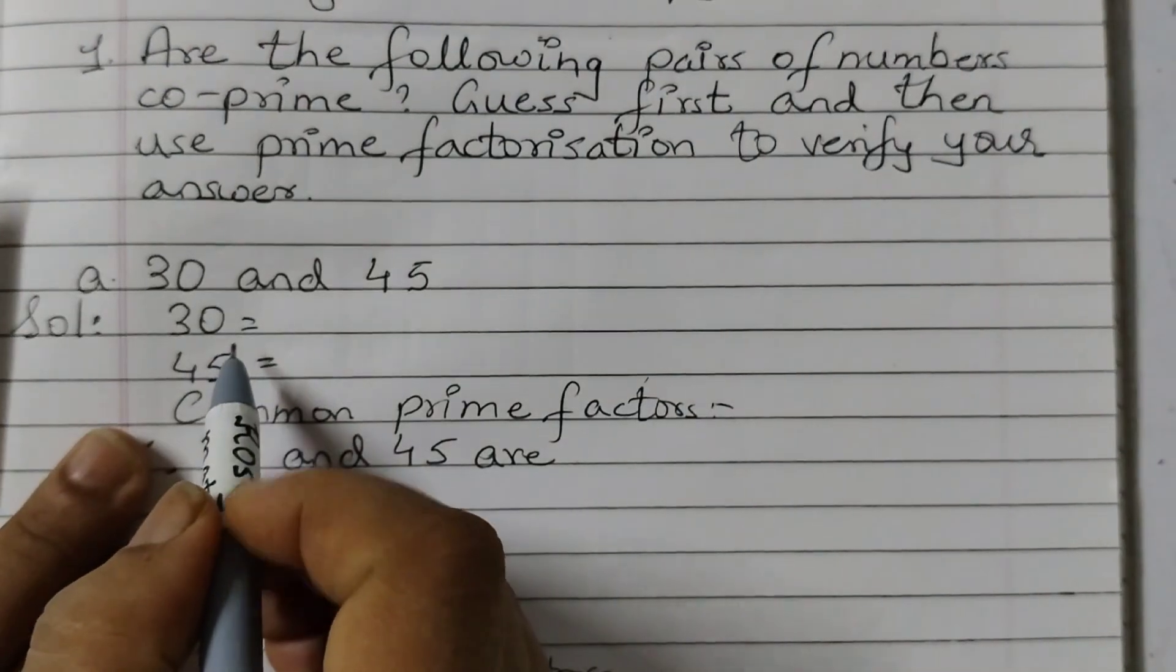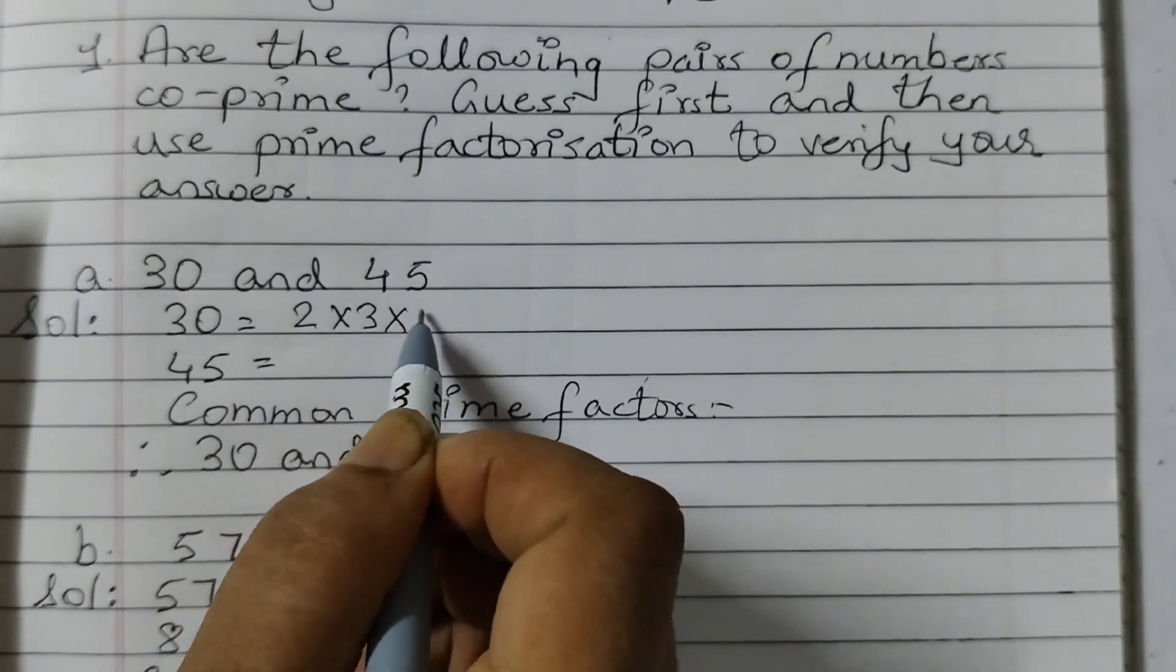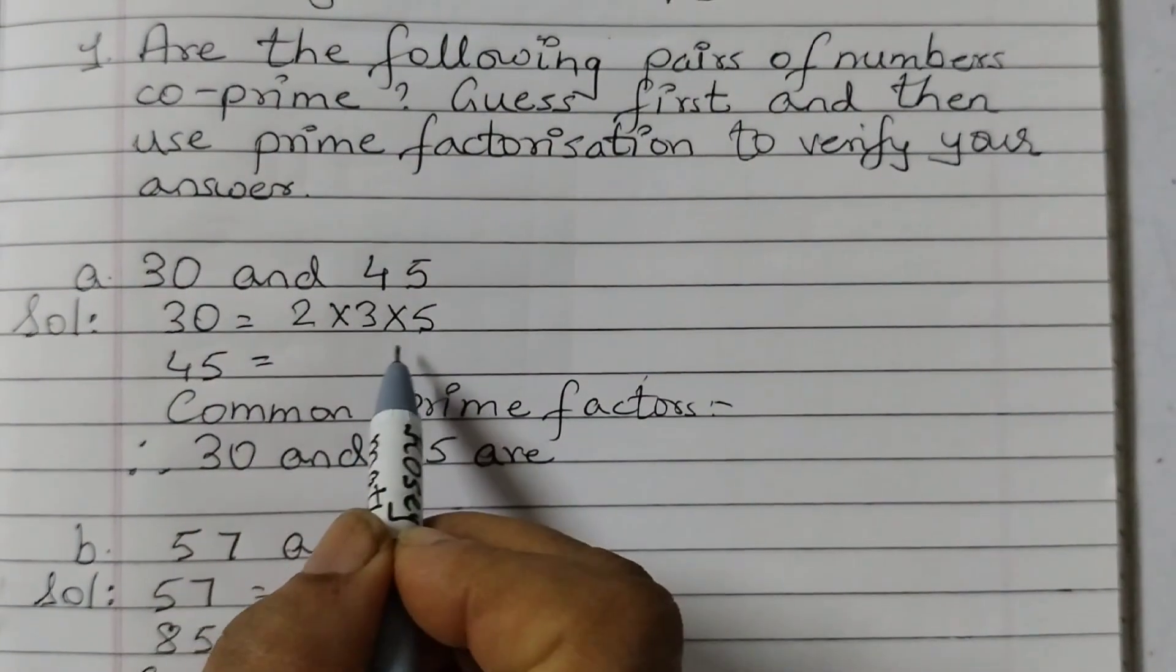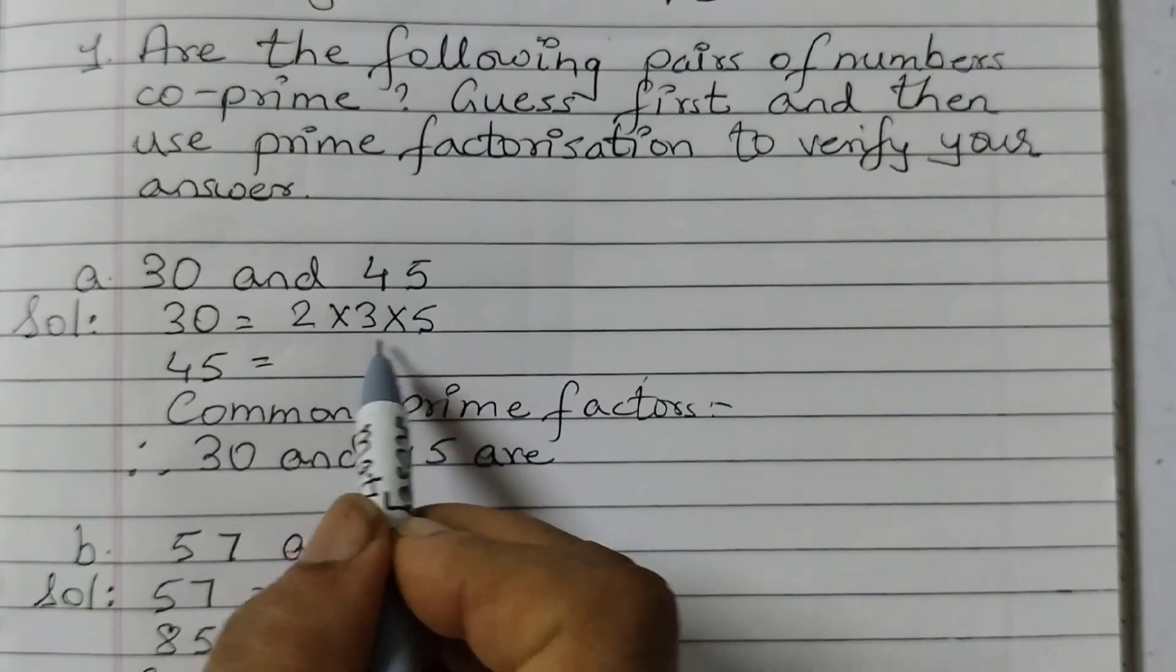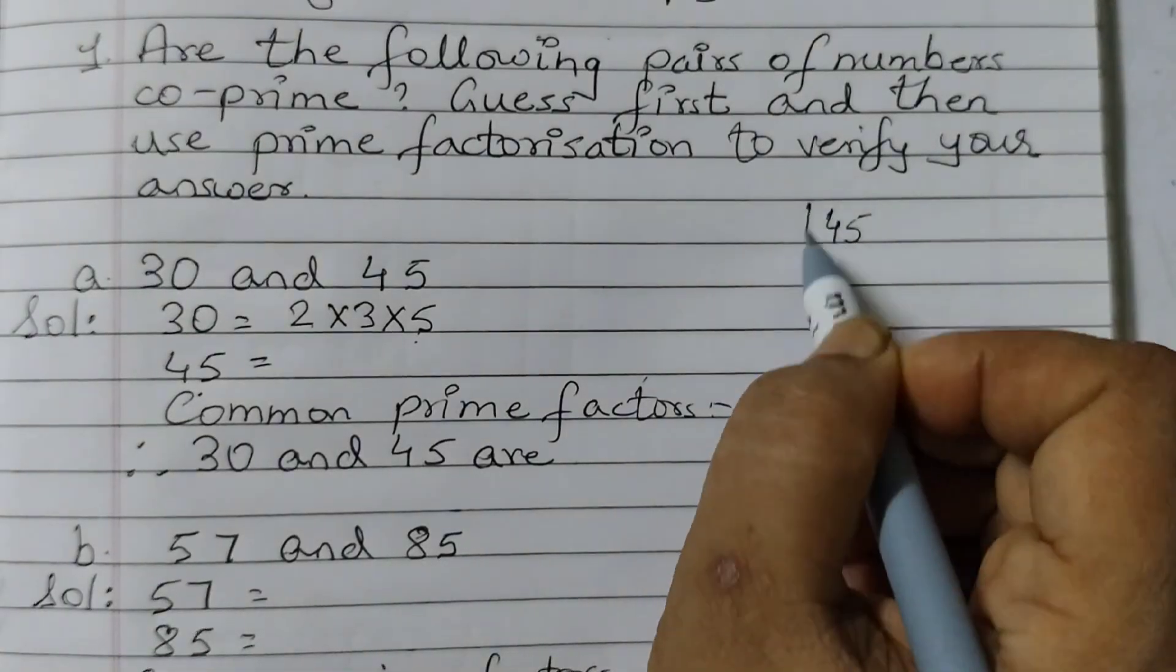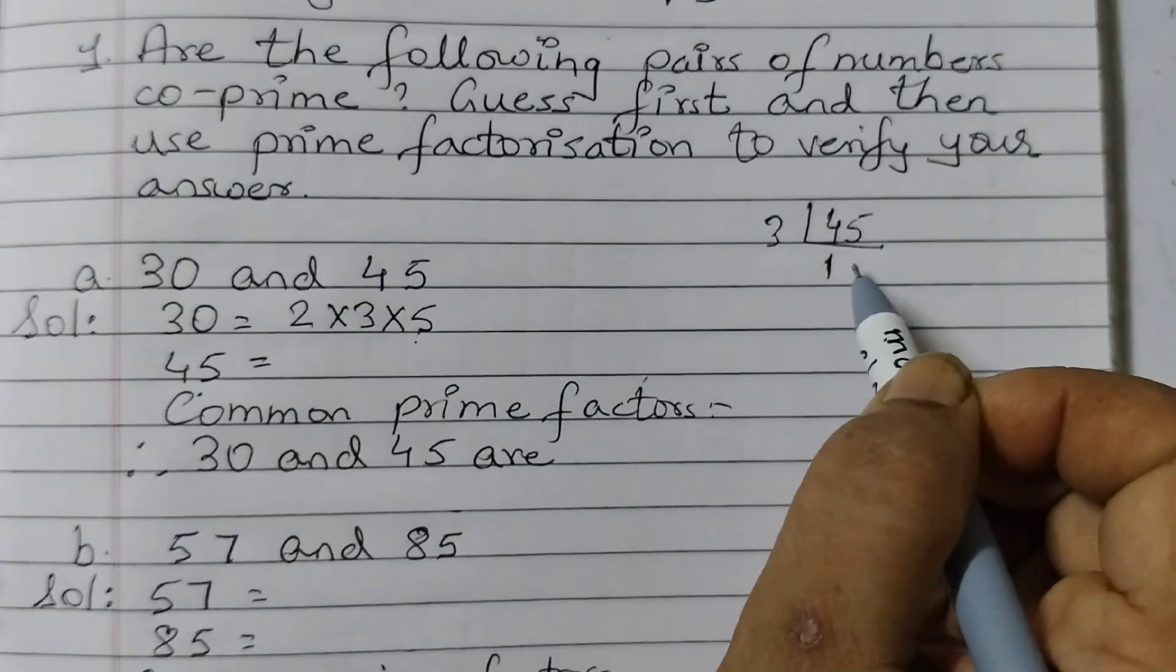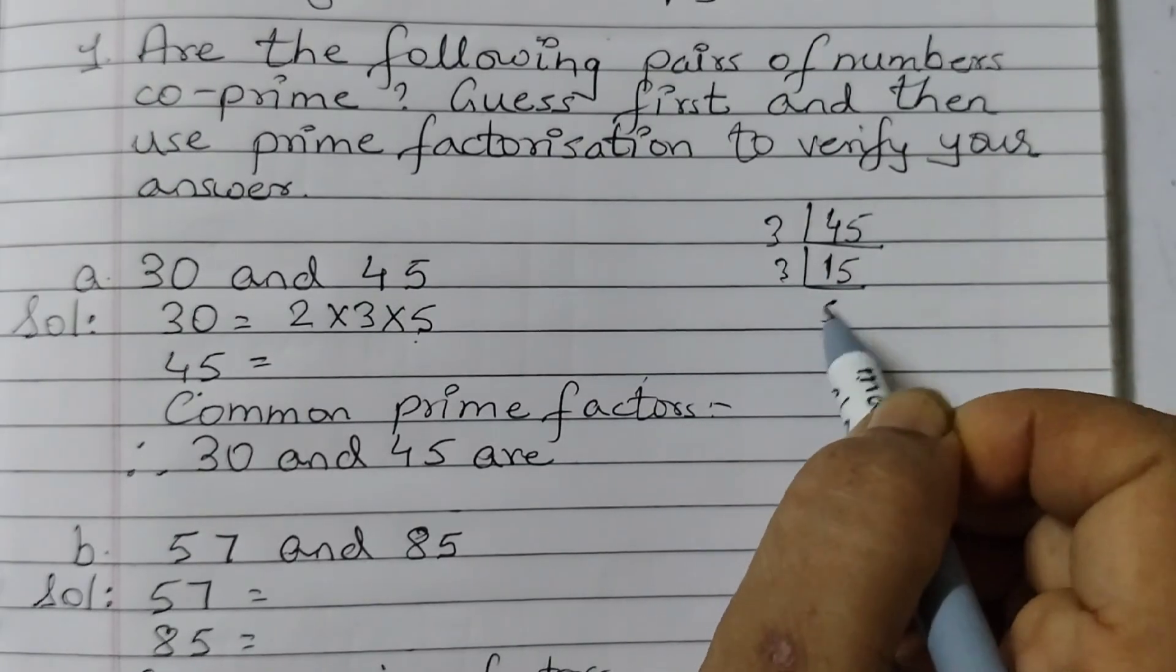So 30 can be written as 2 into 3 into 5. We are doing prime factorization. So here we need to write just the prime numbers. 30 is written as the product of prime factors. 45, 45 same way we will do. So we can do start with 3, 3 ones are 3, 3 fives are 15 and then 3 fives are 15.